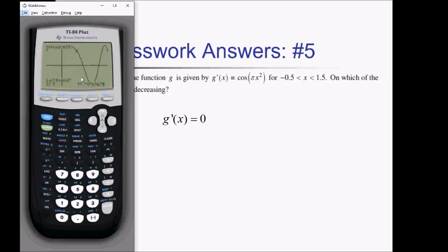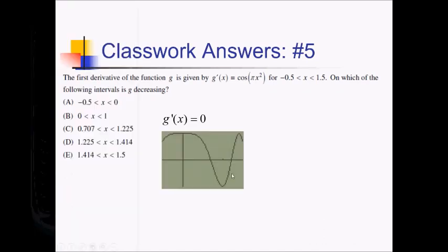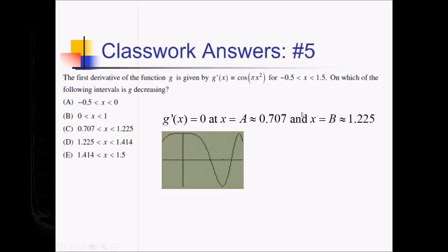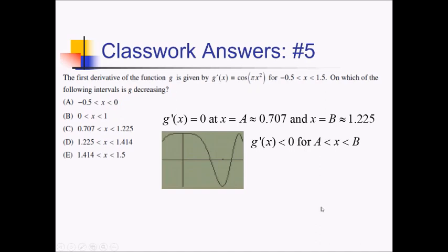Using second trace option two, we find the first zero at approximately 0.707, which I'll call A. Finding the other zero the same way gives us approximately 1.225, which I'll call B. We want where g is decreasing, so that's wherever g' is negative — on the interval from A to B, which is 0.707 to 1.225. So choice C is the answer.